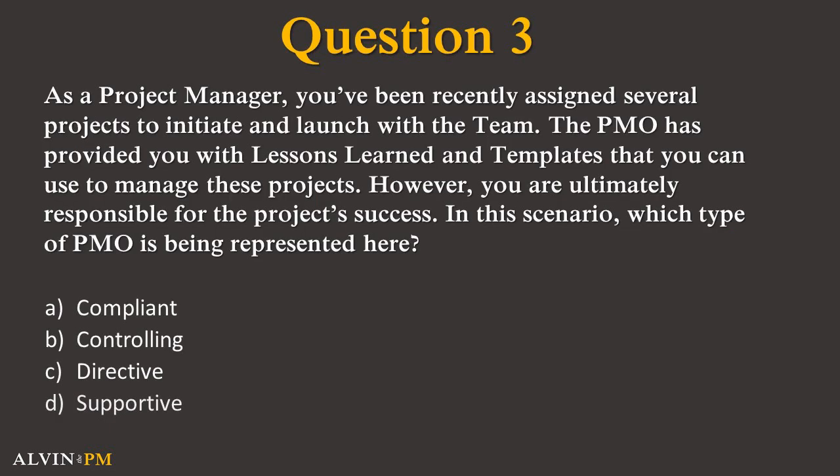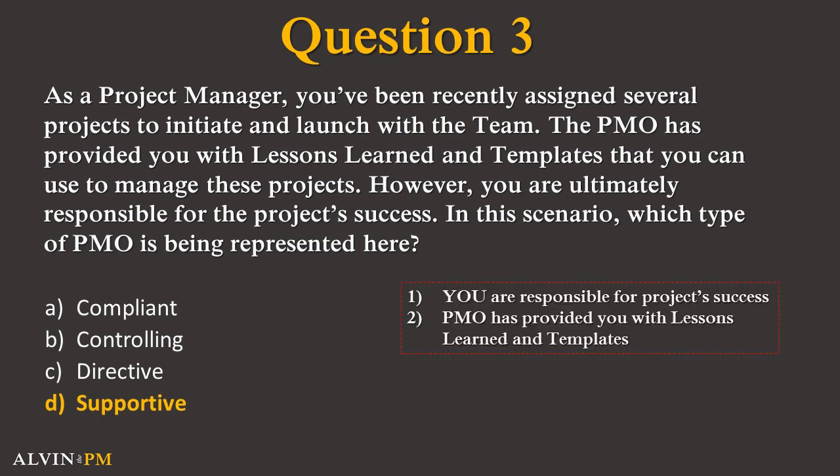Question 3. As a project manager, you've been recently assigned several projects to initiate and launch with the team. The PMO has provided you with lessons learned and templates that you can use to manage these projects. However, you are ultimately responsible for the project's success. In this scenario, which type of PMO is represented here? Is it A. Compliant, B. Controlling, C. Directive, or D. Supportive? The correct answer is D. Because the PMO is not responsible for the success of the project, but still provides support in the form of lessons learned and templates, this is an example of a supportive PMO.